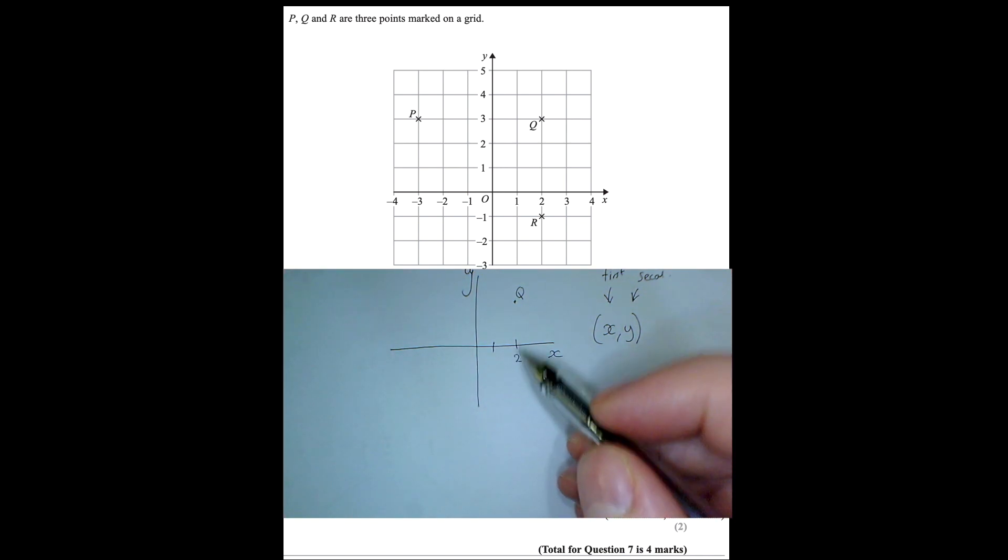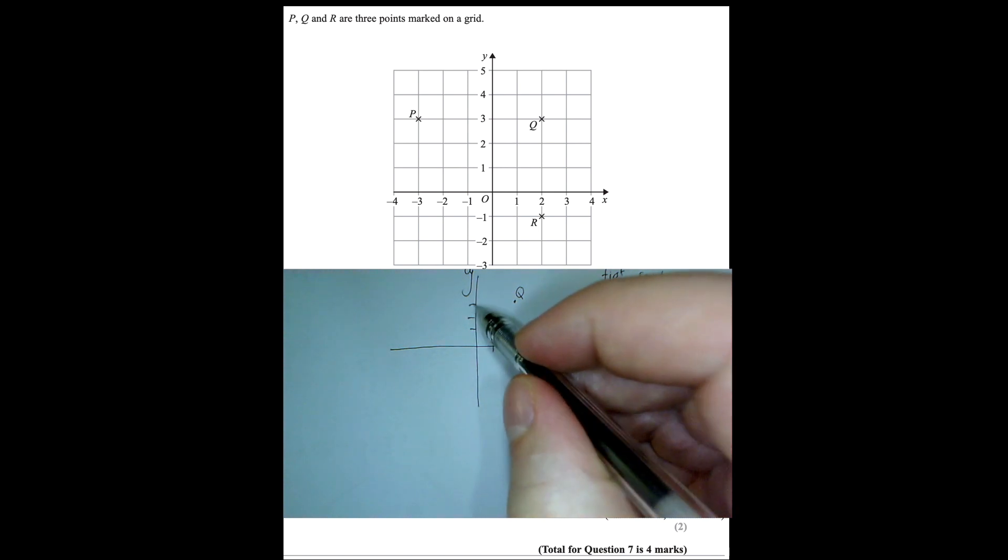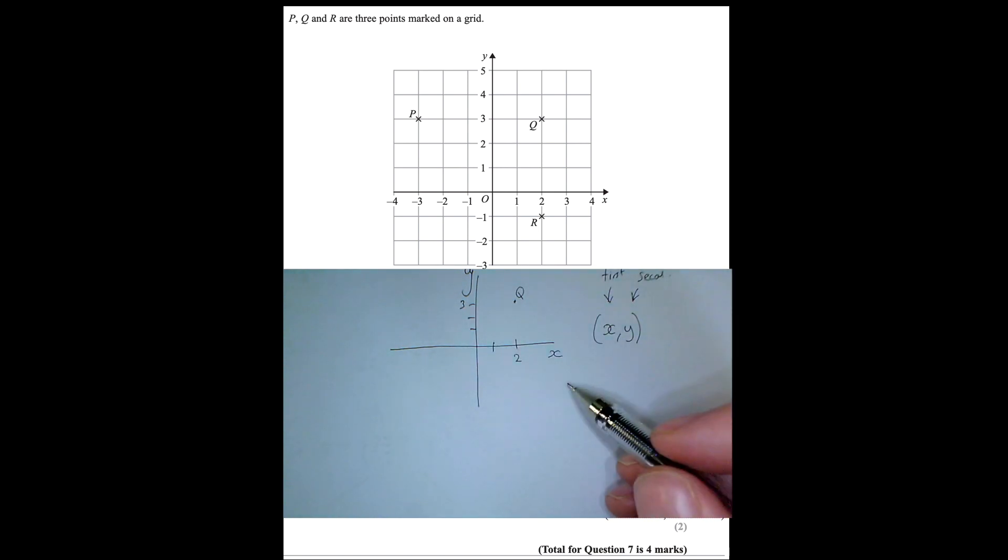So for example, to get to Q, I have to go 2 along the x axis, and then I have to go up 3. So that means the coordinate for Q is (2, 3). OK, and that's the first part, that's the first question.